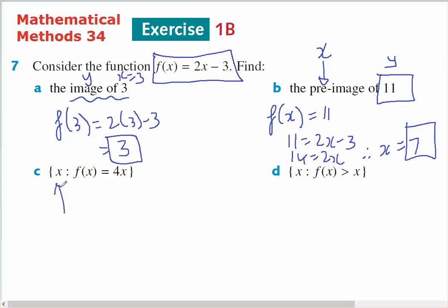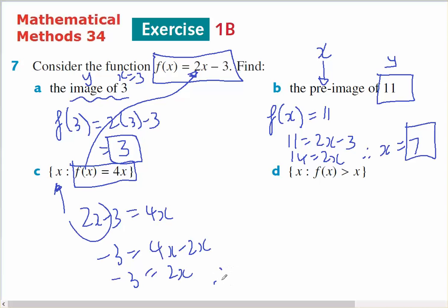In part c, I need to find out what's the x value that makes f(x) equal 4x. I know that f(x) is this, so I've got 2x minus 3 equals 4x. Move the 2x over, minus 3 equals 4x minus 2x, minus 3 equals 2x, therefore x equals minus 3 on 2.